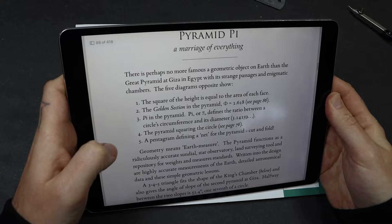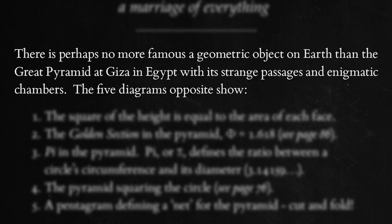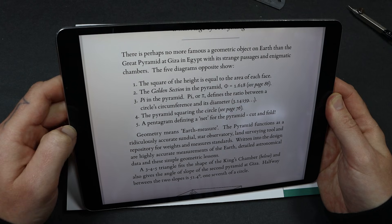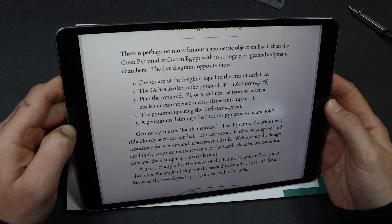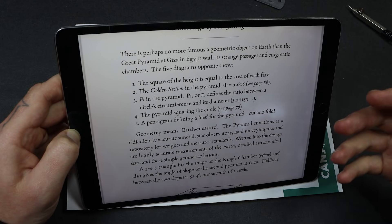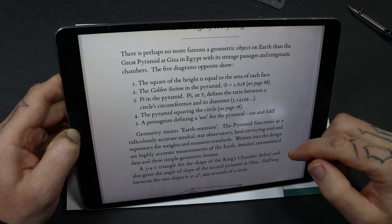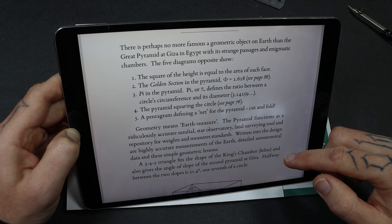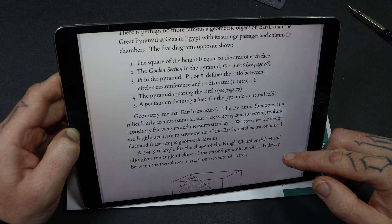On the page before it, it says that there is no more famous geometric object on earth than the Great Pyramid at Giza in Egypt. The five diagrams opposite show the square of the height is equal to the area of each face. Now, I'm no maths guy. I like to just draw this stuff. And I like to use my intuition more than to really understand the mathematics behind all this stuff. So a lot of this means nothing to me. Pi in the pyramid. Pi defines the ratio between a pentagram defining a net for the pyramid. That one I understand.